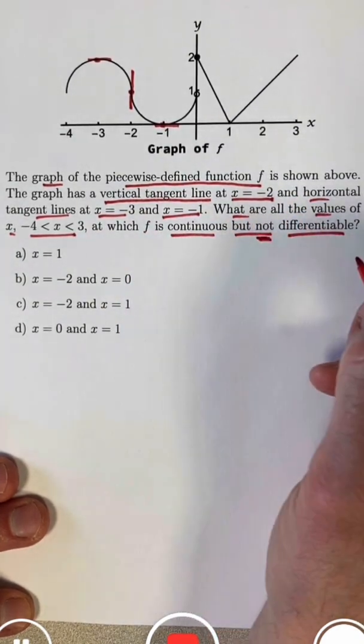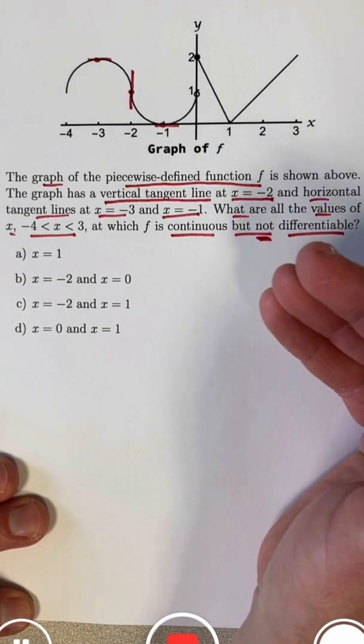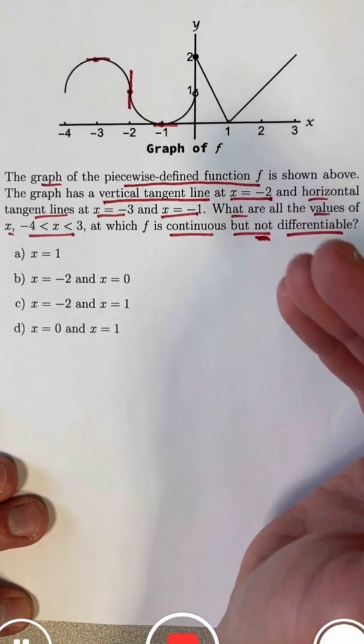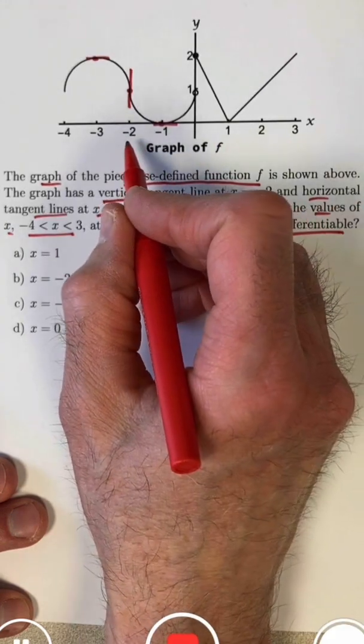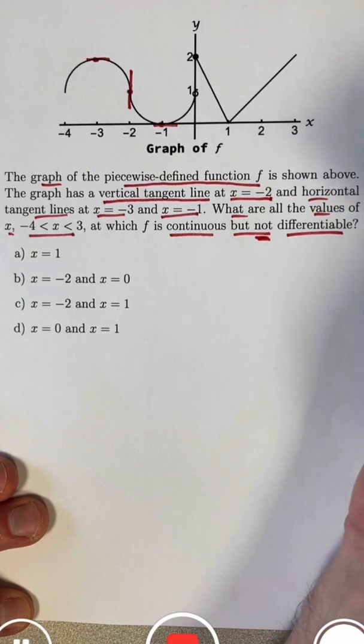Where do we have lack of differentiability? Differentiability means the derivative exists, which means the tangent line exists and has a slope that's not infinite. That's going to mean negative 2 is a spot where the function fails to be differentiable.